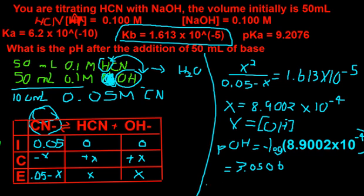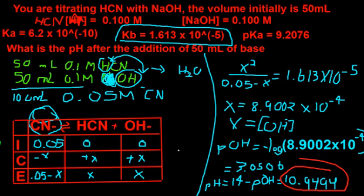And then we know pH equals 14 minus pOH. Which in turn would equal 14 minus 3.0506. Which is about 10.9494. So this is how you find the pH at the equivalence point.